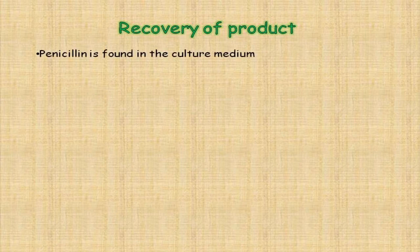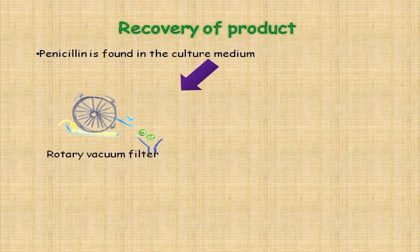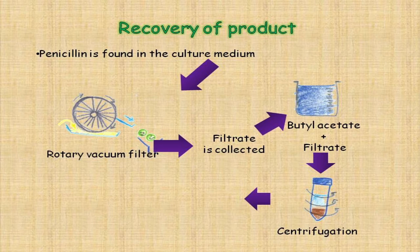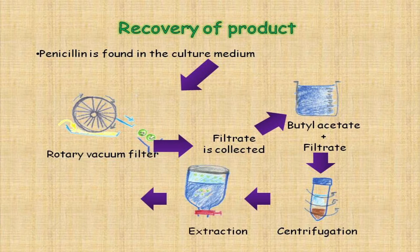Product recovery is done when each batch of fermentation is completed. The medium is recovered, and a rotary vacuum filter is used to separate the cells from the liquid media. The filtrate is then treated with butyl acetate to precipitate the product. Centrifugation is done to condense the precipitate. The leftover liquid, also known as the supernatant, will contain penicillin. Extraction of penicillin from the supernatant yields liquid penicillin.